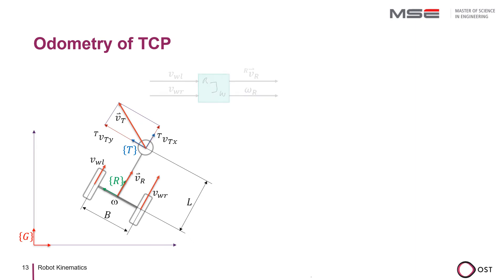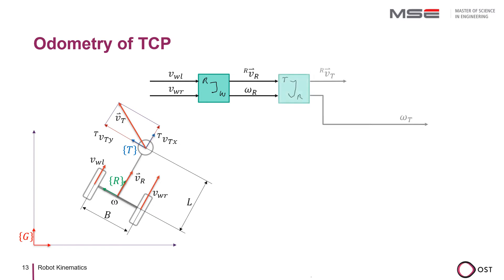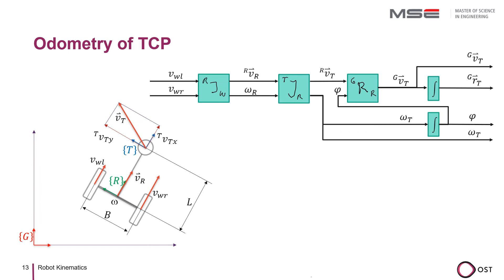With the first Jacobian transformation, we determine the velocity in the robot coordinate system from the wheel movements. With the second Jacobian transformation, we calculate the velocity and angular velocity at the TCP. Since we have determined the TCP velocity in the R system, we can transform it with the rotation matrix into the global coordinate system, where we can calculate the position and orientation of the TCP with odometry.